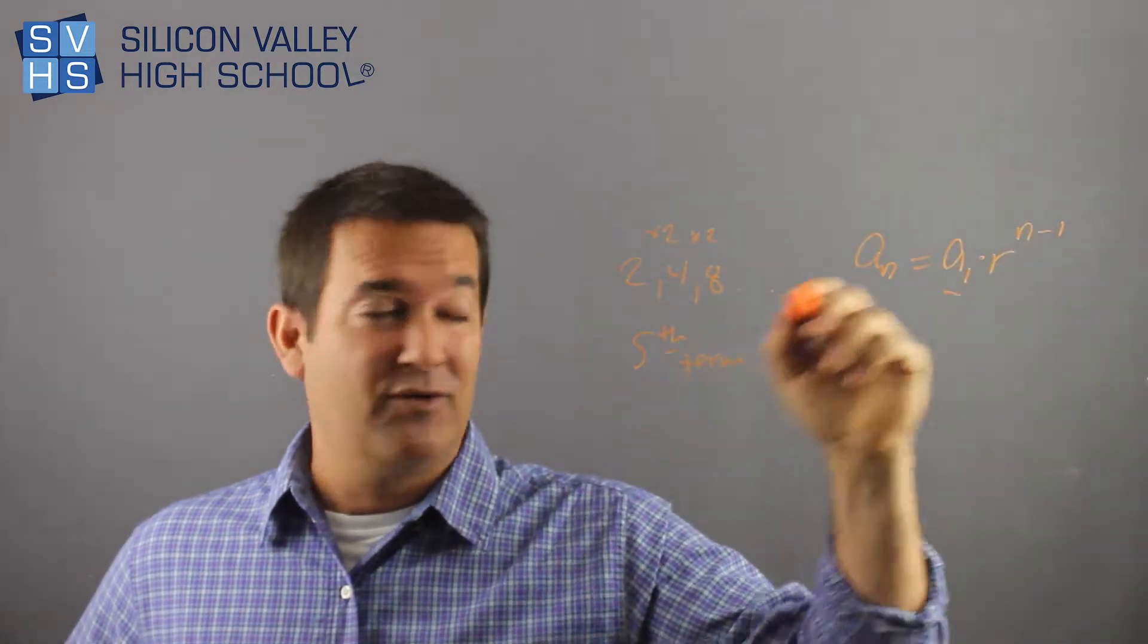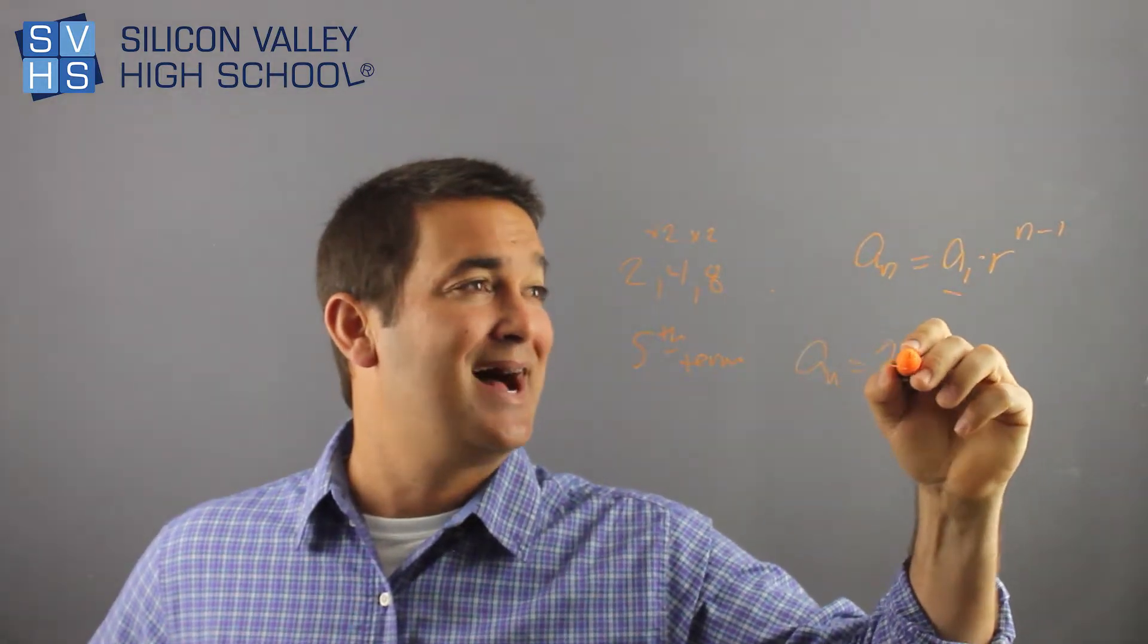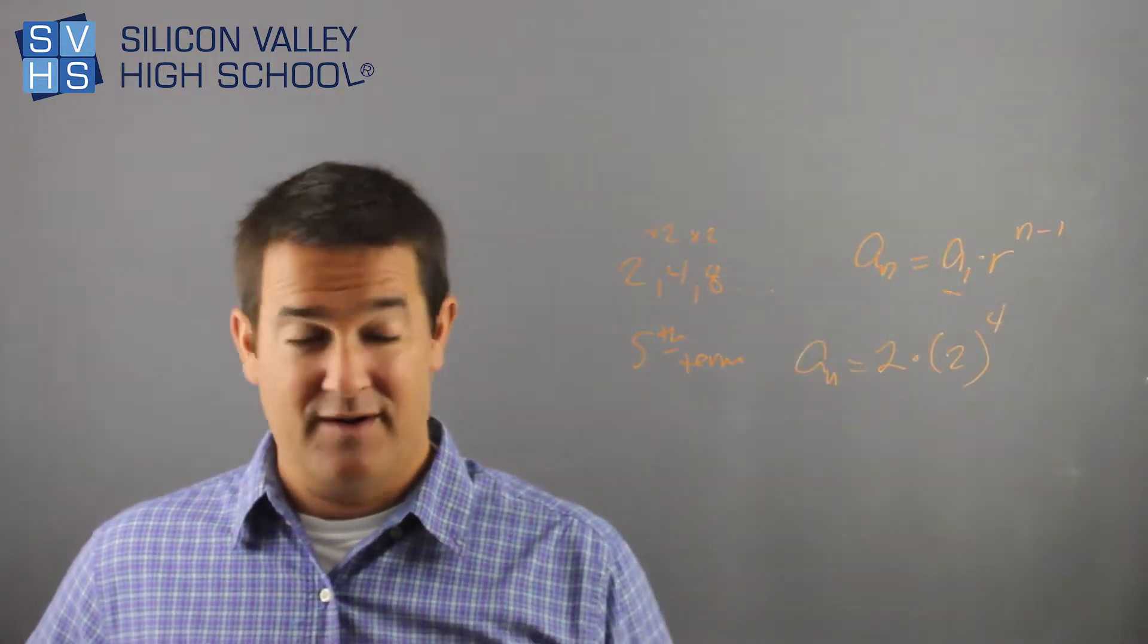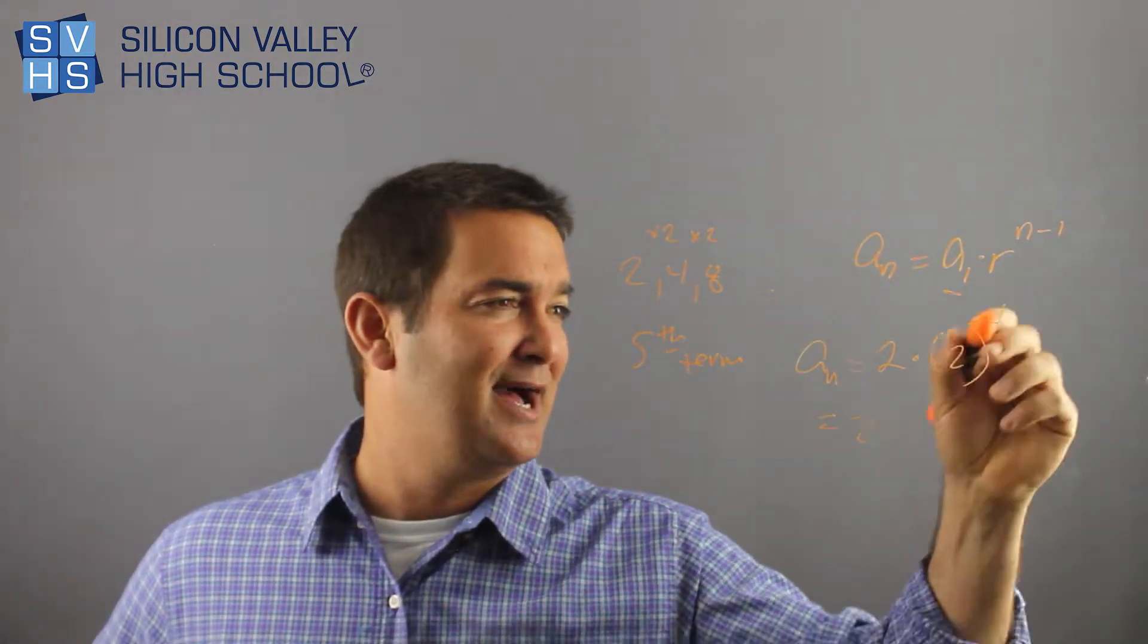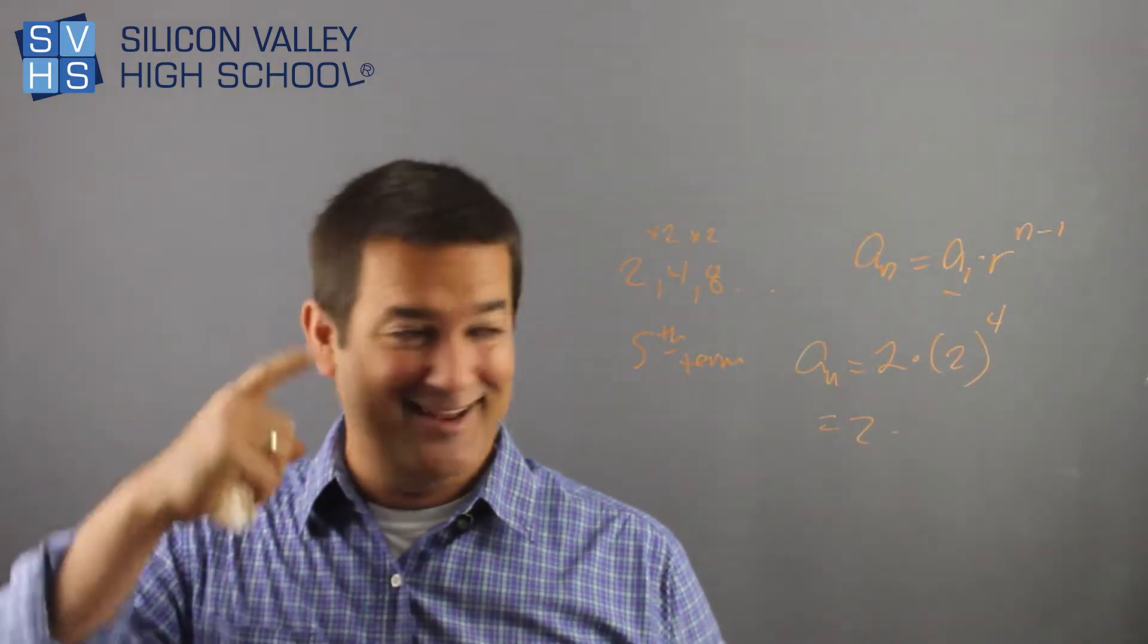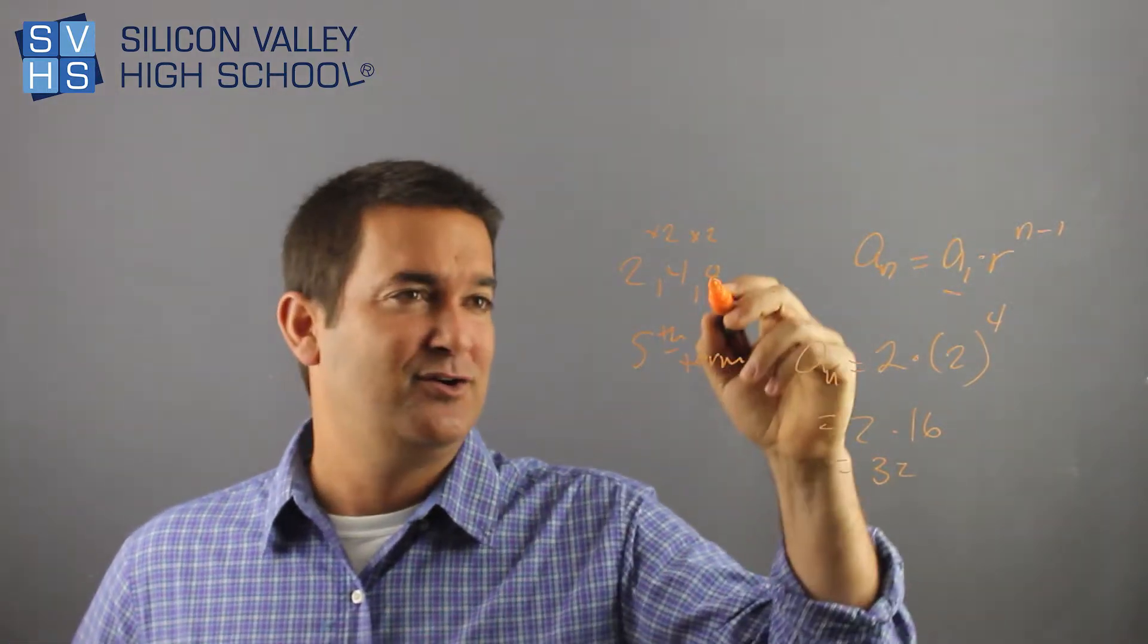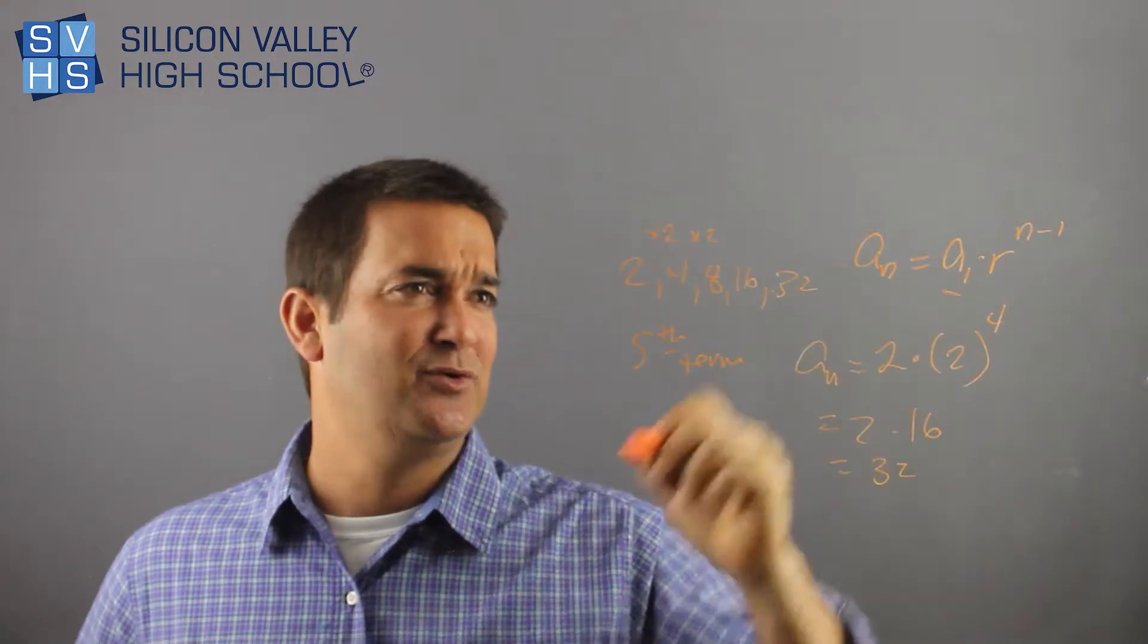And then n is the term they're looking for, minus 1. So this would be a to the n equals a to the 1, which is 2, times r, happens to be 2 as well, raised to the 5 minus 1 or 4. This is 5 minus 1, 4. And then you just do this. This would be 2 times, I think 2 to the 4th is 16. I did that in my head. So this would be 2 times 16. I guess that's 32. The fifth term of this would be 32. Yeah, you could have just figured that out by saying, 8 times 2 is 16, 16 is 32. We're cool.